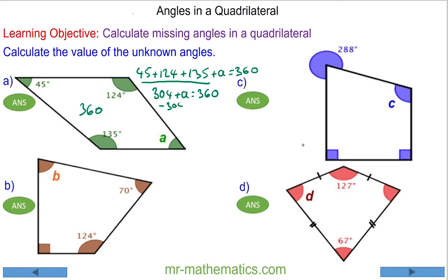Take away 304 from both sides, and these will cancel, so angle A will equal 56 degrees. We can check this works because 45 plus 124 plus 135 plus 56 equals 360.